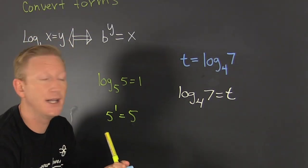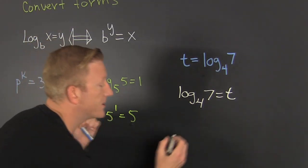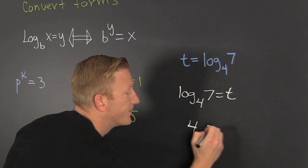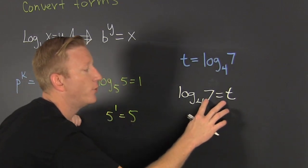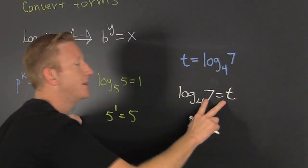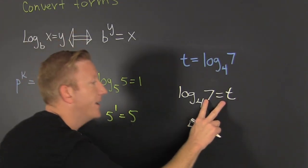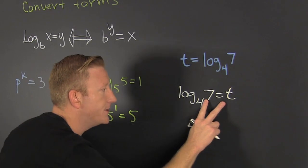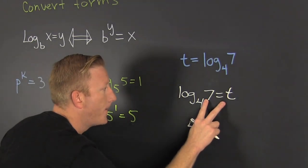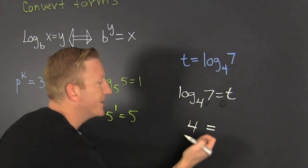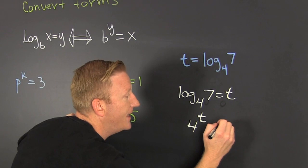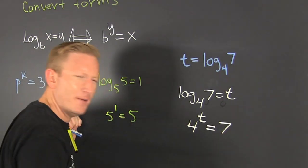So now I have my log on the left. As long as the log is on the left, I switch: t and 7.